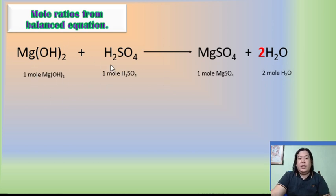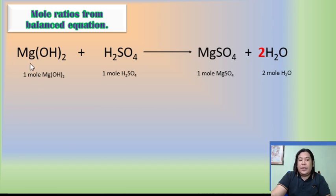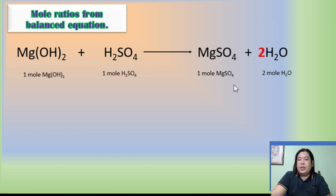So how to interpret this kind of chemical equation: one mole is based on the stoichiometric coefficient of magnesium hydroxide. As you can see, there is no numerical coefficient, so it is understood as one. The plus sign on the reactant side means 'reacts with,' so one mole of magnesium hydroxide reacts with one mole of sulfuric acid. The arrow symbol means 'yields' or 'gives.' On the product side, the plus sign is read as 'and,' not 'reacts with.'